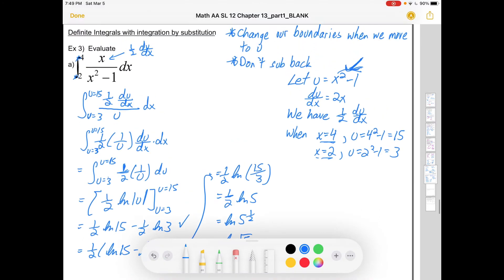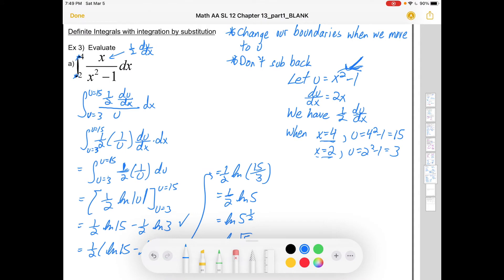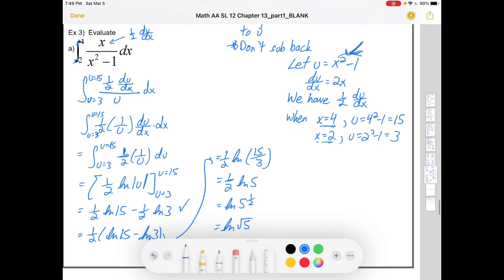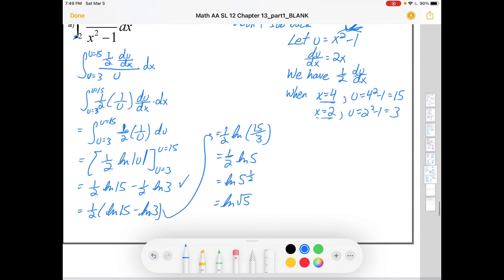But what we did here is we changed our boundaries and we didn't sub back and get x. Now if you really wanted to sub back and put it back in x. If you wanted to take it from this step and say no no no I'm going back. So I'm going to have ln of the absolute value of x squared minus 1 and I'm going back to my x values from 2 to 4.